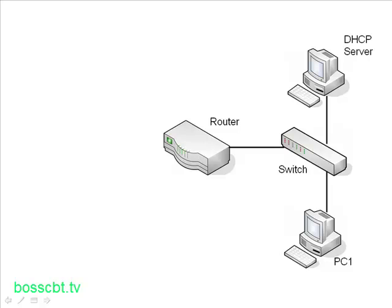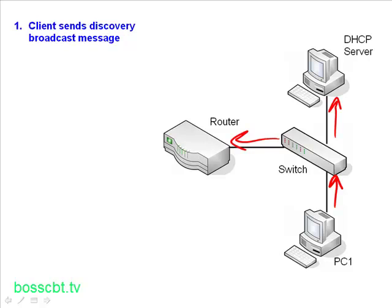Now let's look at the actual process. The client kicks things off. The first thing that happens is the client sends a discovery broadcast message. The client is looking to find out if there are any DHCP servers on the local area network. PC1 sends out a broadcast message, which by definition goes to every node on the network. In our example there's only one DHCP server, but in reality you could have multiple DHCP servers on a LAN segment. Step one: broadcast to everybody — the PC is simply trying to find a DHCP server.